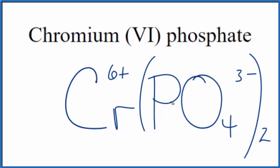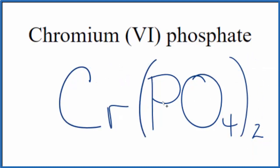This would be the formula for chromium (VI) phosphate. Let's remove these symbols here and this is the formula for chromium (VI) phosphate: Cr(PO4)2.